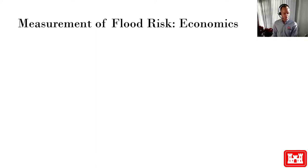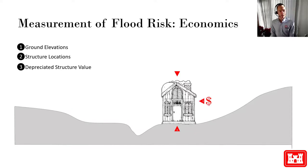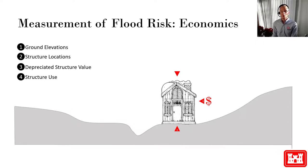This involves tying together information from different sources. We start with terrain or topographic data, and this gives us ground elevations. The ground elevations are linked to structure locations, giving us the ground elevation at each structure. The structures have values, and we care about the structure's value in its current condition, which is the depreciated structure replacement value. Structures also have other attributes, such as structure use, which helps us generalize information about the value of the structure's contents, the structure's likely method of construction and therefore susceptibility to damage. We also generalize some uncertainties and other point estimates, such as the number of vehicles at each structure using the structure's use.